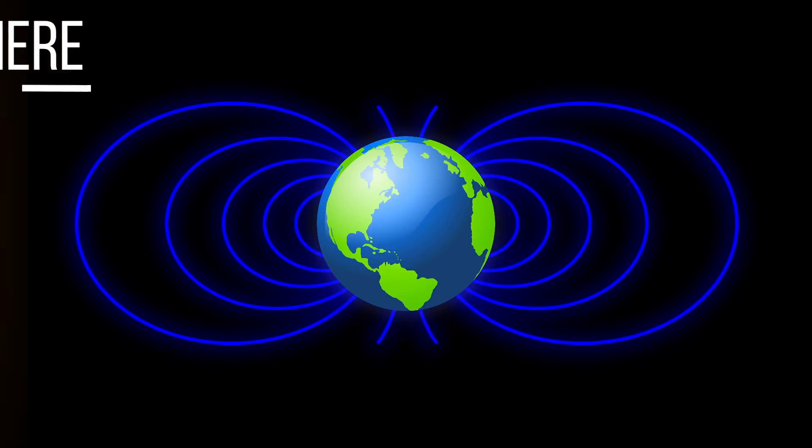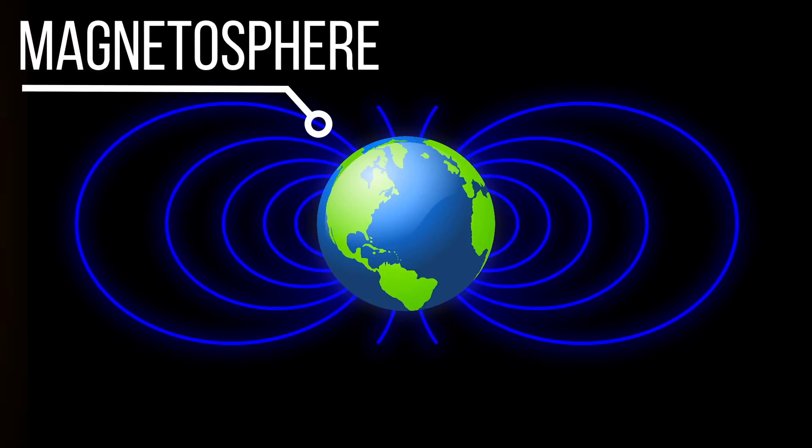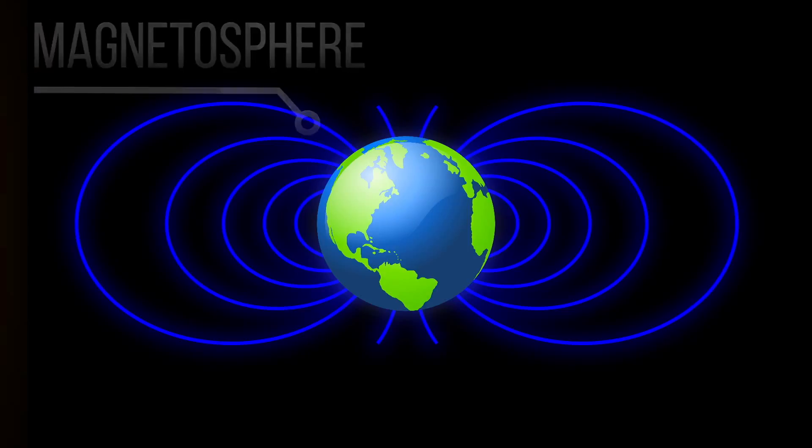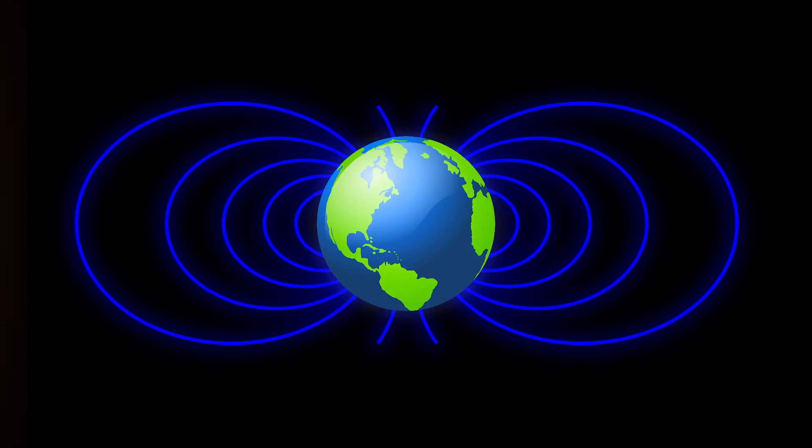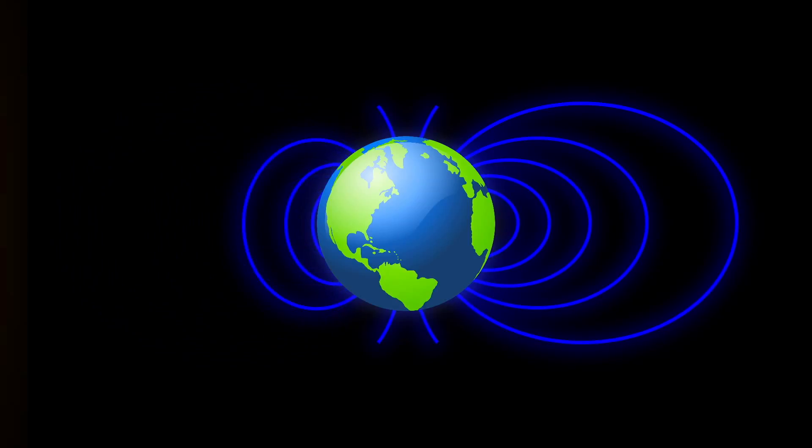The magnetic field of the Earth is called the magnetosphere. When the ions and electrons in solar wind hit the magnetosphere, they mostly just get deflected off. With so many of these particles hitting it, the magnetosphere gets compressed on the side facing the sun.